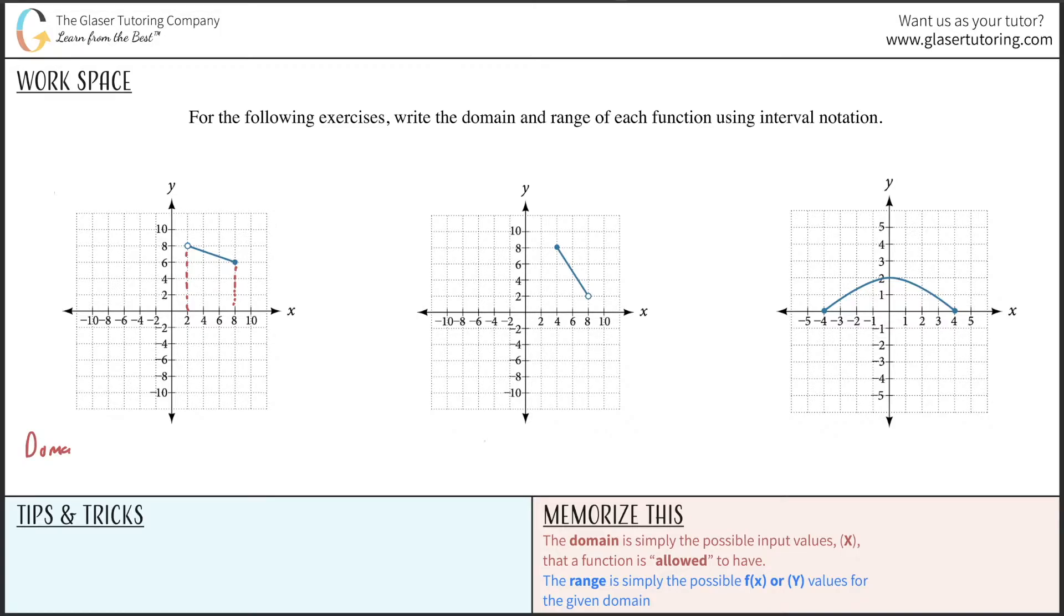Now for the domain using interval notation, we cannot include 2 because it's an open circle. So it's going to be 2 exclusive, that's the purpose of the parenthesis, then inclusive all the way to 8. Inclusive of 8 is denoted with the bracket. So this would be the domain for this graph: (2, 8].